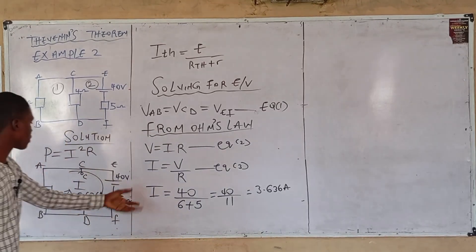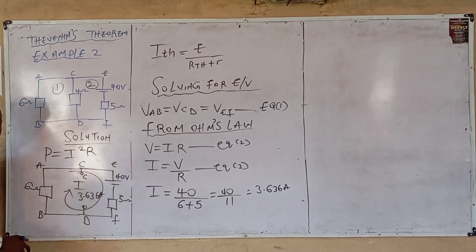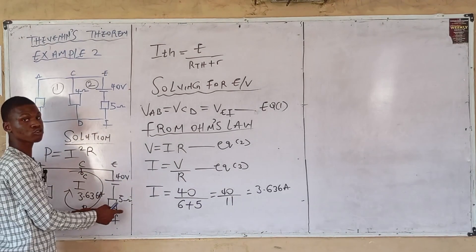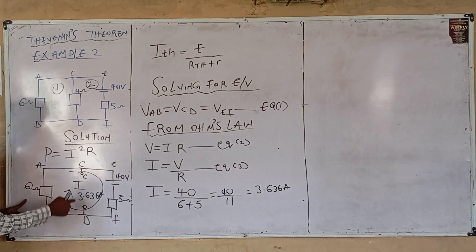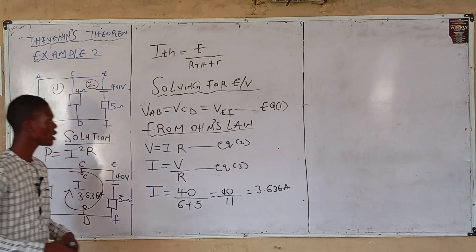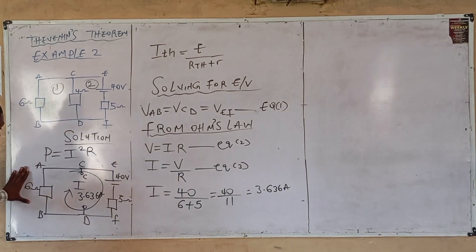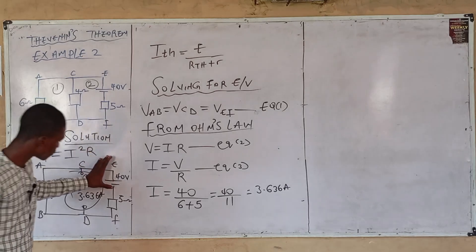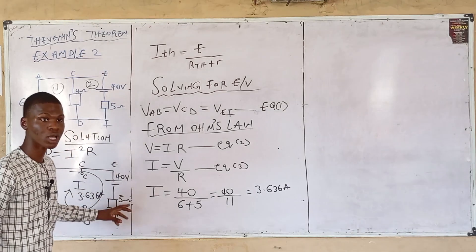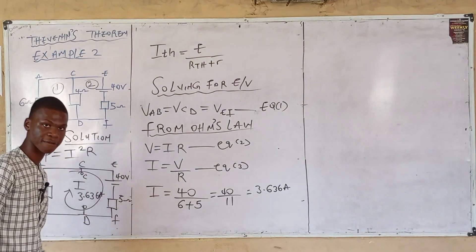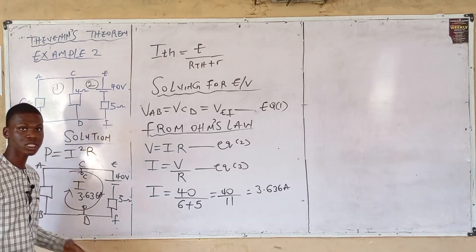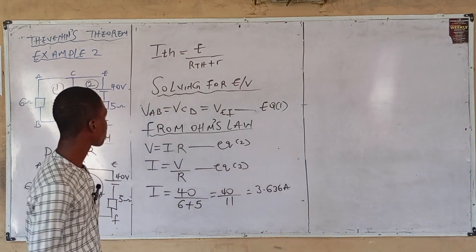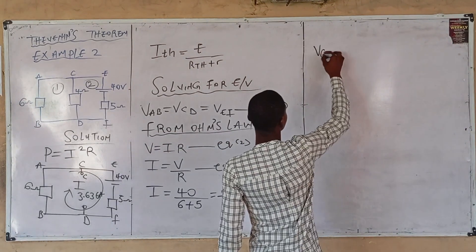The current flowing through this circuit is 3.636 amperes. The current through the 5-ohm resistor is 3.636 A and the current through the 6-ohm resistor is also 3.636 A. Now let's get the voltage across the 6-ohm resistor — that is V_AB — and also the voltage across the 5-ohm resistor to obtain V_EF, which equals V_CD (the load resistor voltage).